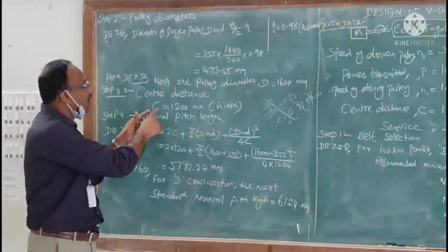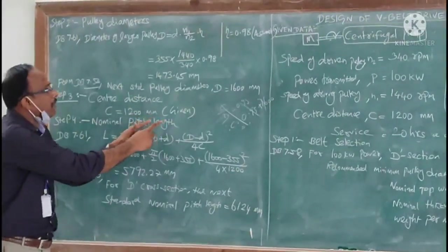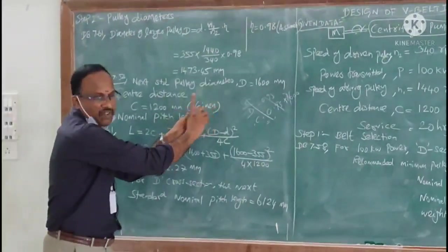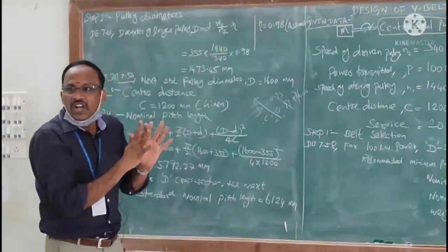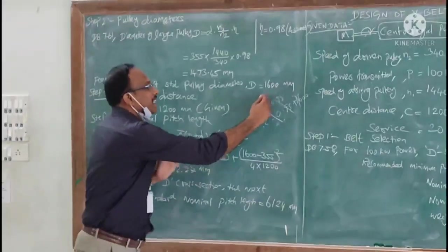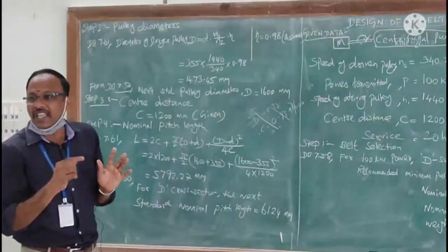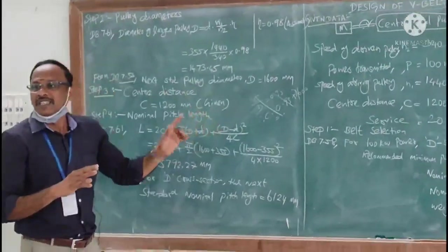In the problem itself, the C value is directly given, so you can take C as 1200 millimeter. If the C value is not given, we have to go to page number 7.61. We can take this ratio C by D equal to some ratio, based on which we have to calculate the center distance.